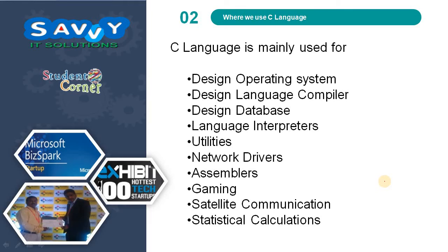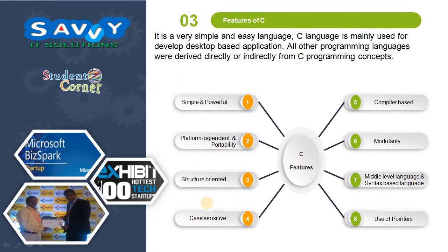C language is mainly used for designing operating systems, compilers, databases, interpreters, utilities, network drivers, assemblers, gaming, satellite communications, statistical calculations, and many other heavily used applications.